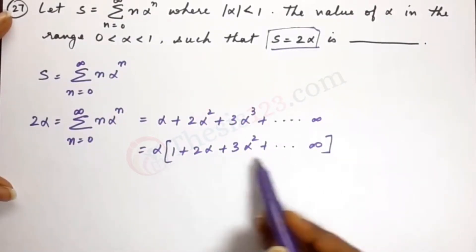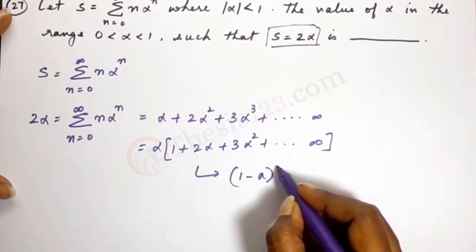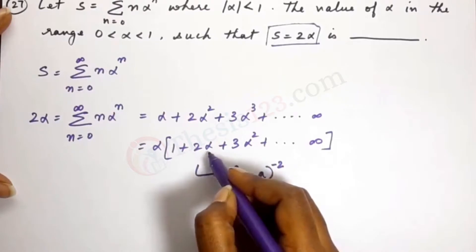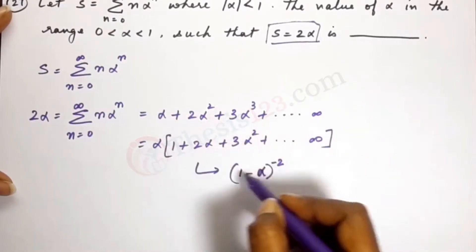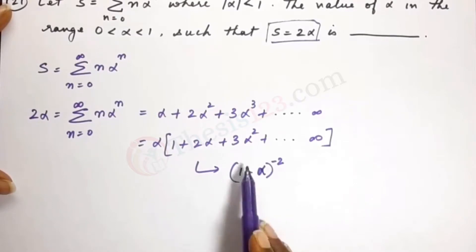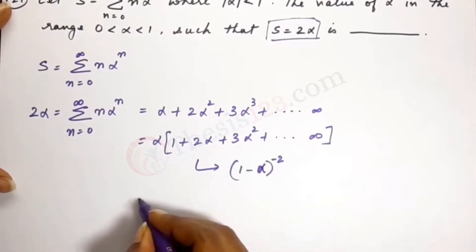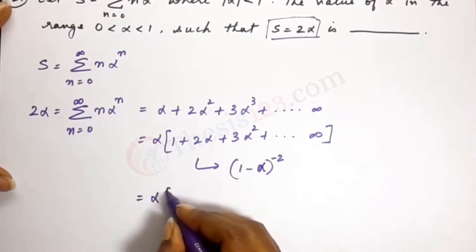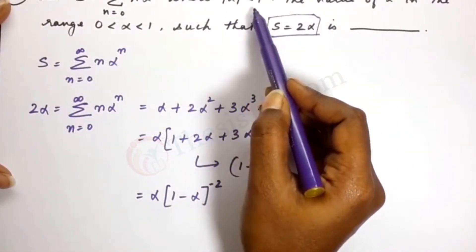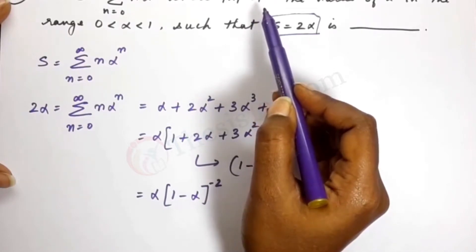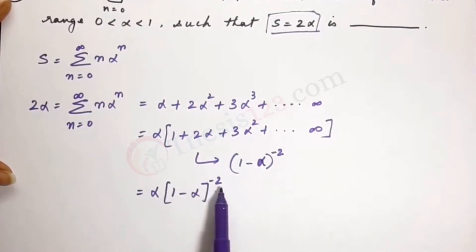The expansion inside the brackets — 1 plus 2 alpha plus 3 alpha squared and so on — corresponds to 1 minus alpha to the power of minus 2, by the binomial expansion. This is valid for the condition that the modulus of alpha is less than 1, which is satisfied here.